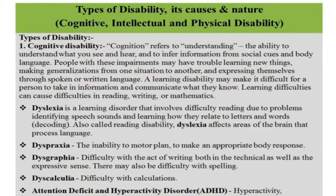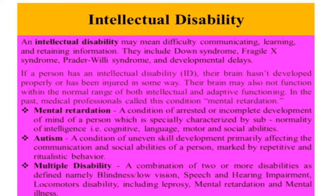Attention difficulty, or hyperactivity disorder, is also known as ADHD. The second type is intellectual disability, characterized by significant limitations in intellectual functioning. If a person has an intellectual disability, their brain has not developed properly or has been injured in some way. Their brain may not function within the normal range of intellectual and adaptive functioning. In the past, medical professionals called these conditions mental retardation. It also includes psychiatric disability related to individual social disabilities such as behavior, emotions, and thinking. Intellectual disability begins before the age of 18 years.